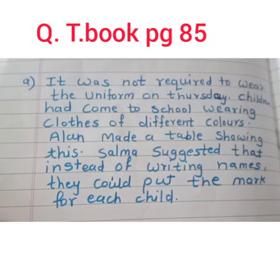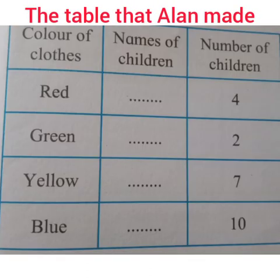It was not required to wear the uniform on Thursday. Children had come to school wearing clothes of different colors. Alan made a table showing this. The table has three columns: color of clothes, name of children, and number of children. For red color, 4 children were wearing red clothes, so the number of children is 4.